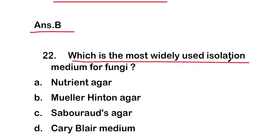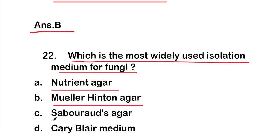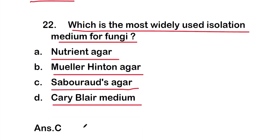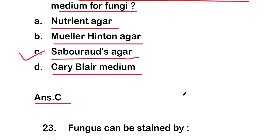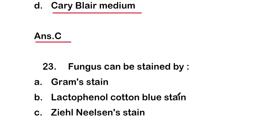Question 22: Which is the most widely used isolation medium for fungi? Options: option A - nutrient agar, option B - Mueller Hinton agar, option C - Sabouraud's agar, or option D - Carey Blair medium. The right answer is option C, Sabouraud's agar, which is the most widely used isolation medium for fungi.